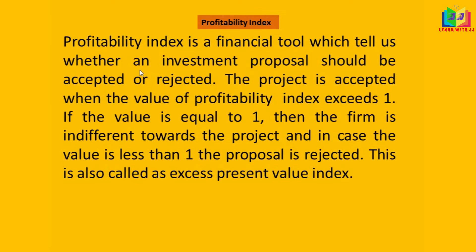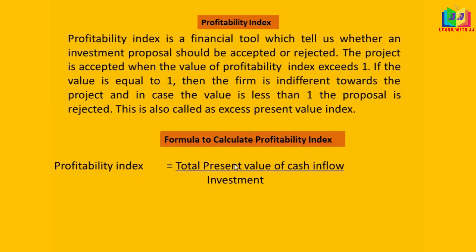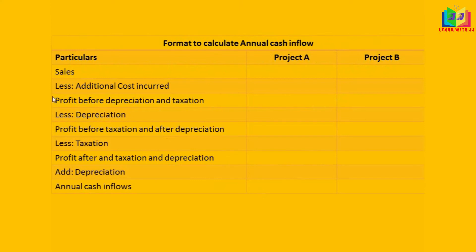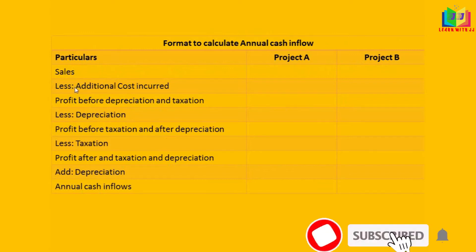This profitability index is also called the excess present value index. The formula to calculate the profitability index is: total present value of cash inflows divided by investment. The cash inflow can be calculated using a specific format.